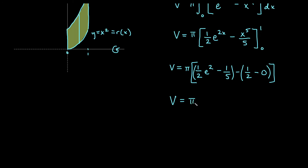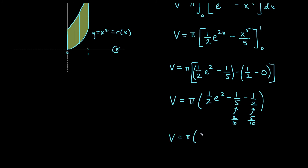Simplifying, we get pi times one half e squared minus one fifth minus one half. Finding a common denominator: one fifth becomes 2 over 10 and one half becomes 5 over 10, so we get pi times one half e squared minus 7 over 10. Since it's a volume, the units are units cubed. That's our answer for the volume of this solid.